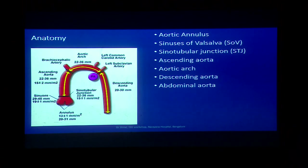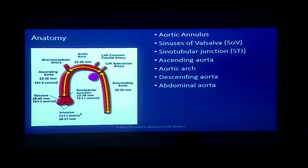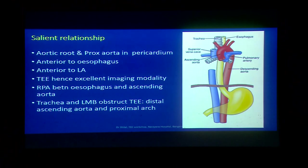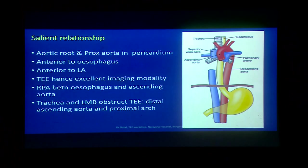Starting with the anatomy of the aorta: aortic annulus, sinuses of Valsalva, sinotubular junction, ascending aorta, arch with its branches, descending aorta, and then the abdominal aorta. Some measurements are shown in the picture. The important serial relationship is the aortic root and the proximal aorta — it lies in the pericardium. So whenever there is a dissection, there is a risk to the aorta. The rest of the structures help in TEE assessment.